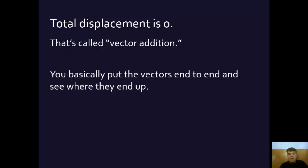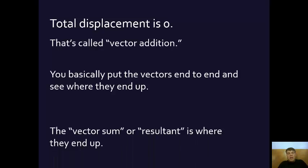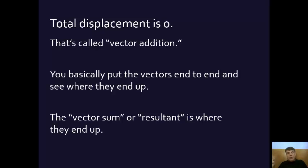You can see examples of this in Young and Friedman. We call where the vectors end up the vector sum, or another word for it is the resultant — basically, what is the result of all this moving around? And don't think it's just distance. You can also do this for miles per hour, or even electric fields. It's just easy to talk about distance because we're at the beginning of a physics book.